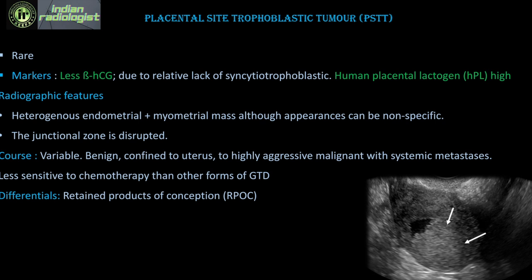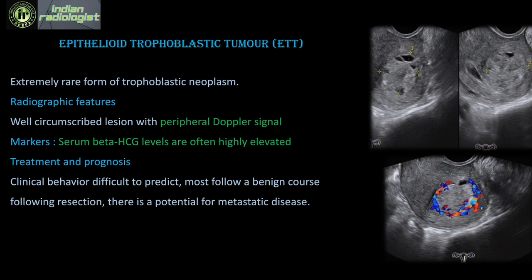The rarer placental site trophoblastic tumor tends not to have very high beta-HCG due to lack of syncytiotrophoblastic tissue, but has high human placental lactogen. It shows a heterogeneous endomyometrial mass with disrupted junctional zone — a very non-specific appearance. The variable course can be benign, and response to chemotherapy is much less compared to the rest of gestational trophoblastic disease. The other rare variety, epithelioid trophoblastic tumor, is a well-defined lesion with peripheral vascularity considered classical for it. Serum beta-HCG levels are high, and the course is difficult to predict; it can be benign but may also metastasize.